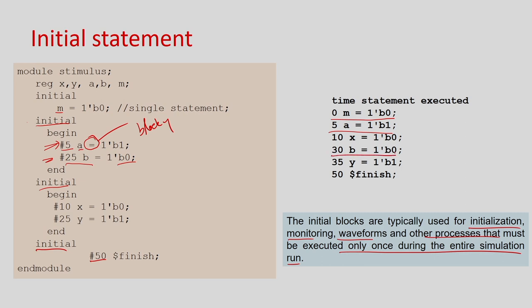In the third initial block, which runs in parallel with the others, X becomes 0 after 10 units of time. This block does not wait for the other blocks — all four initial blocks run in parallel. Because of the blocking assignment in that block, Y becomes 1 after 10 + 25 = 35 units of time. At the 50th time unit, overall execution stops.